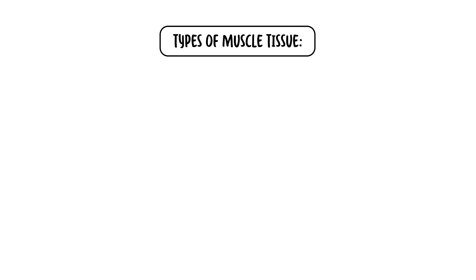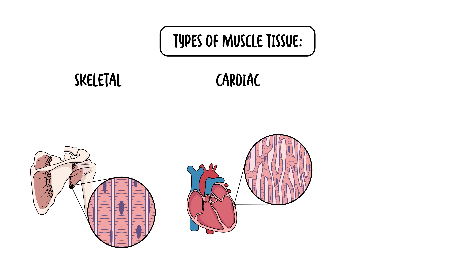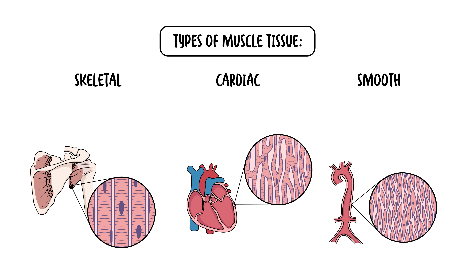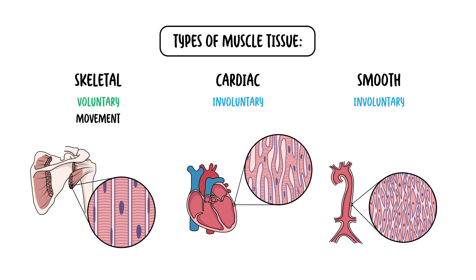There are actually three types of muscle tissue: skeletal muscle, cardiac muscle, and smooth muscle. Skeletal muscle is voluntary — these are muscles that help with movement, such as bending your arm. Cardiac and smooth muscles are involuntary. Cardiac muscles contract to pump blood out of the heart, and smooth muscles line the blood vessels and intestines to help move things along.